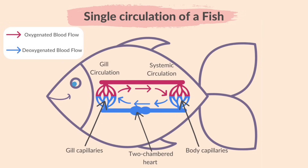When the heart pumps the blood to the gills to be oxygenated, it's called gill circulation. The blood then continues through the rest of the body before arriving back at the atrium, and this is called systemic circulation.